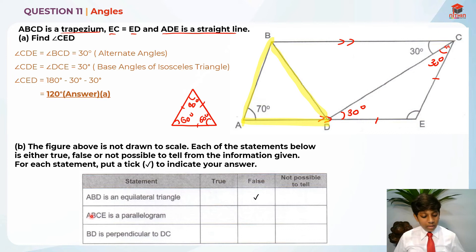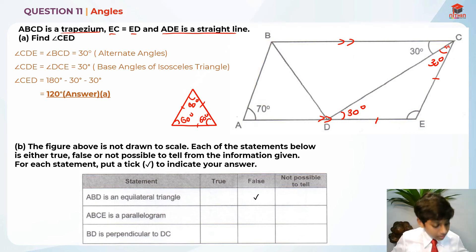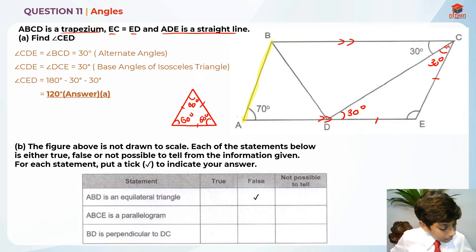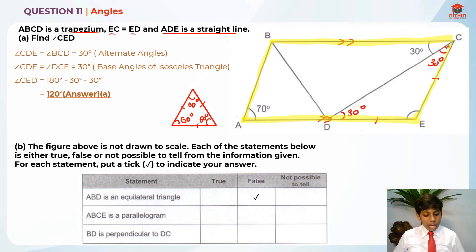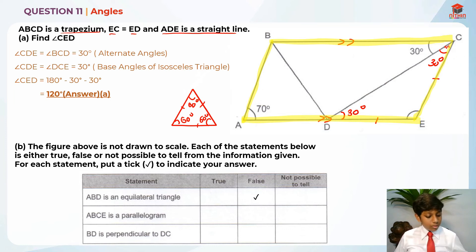The next statement is: ABCE is a parallelogram. Looking at the figure, we know it is false because only BC and AD are parallel to each other — the other pair of lines are not parallel. So ABCE is not a parallelogram, and the answer is also false.